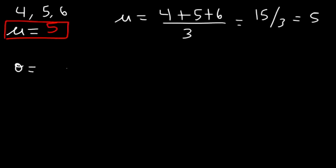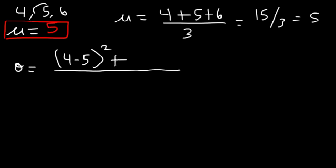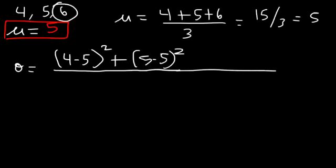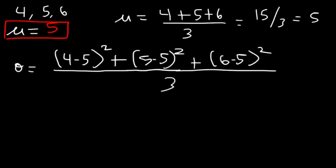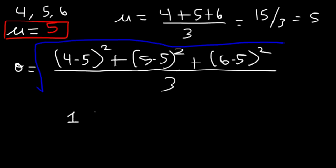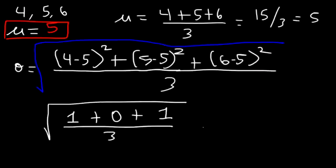Now we can calculate the standard deviation. Before applying the square root, let's calculate the differences. 4 minus 5, squared; then 5 minus 5, squared; then 6 minus 5, squared. This is all divided by n, and don't forget to take the square root of the entire thing. 4 minus 5 is negative 1; negative 1 squared is 1. 5 minus 5 is 0. 6 minus 5 is 1. Adding those: 1 plus 0 plus 1 is 2, all divided by 3.